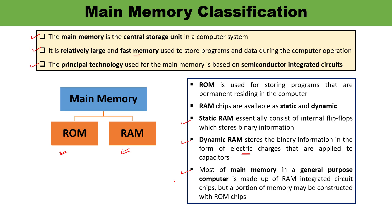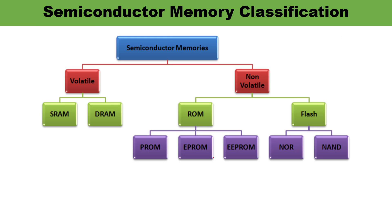A portion of memory can be constructed with ROM chips, meaning main memory is constructed using both RAM and ROM, but the major portion is RAM. Now let us talk about semiconductor memory classification. Semiconductor memories are basically classified into two categories: volatile and non-volatile.